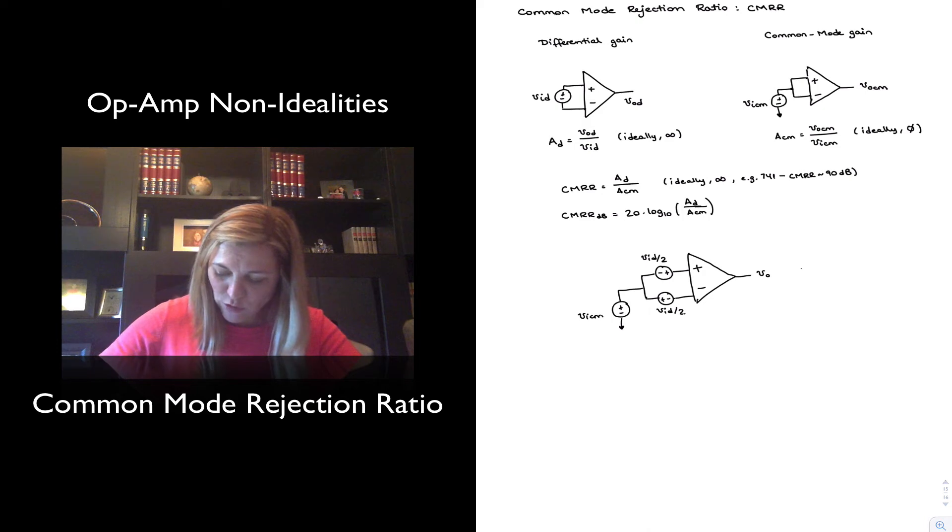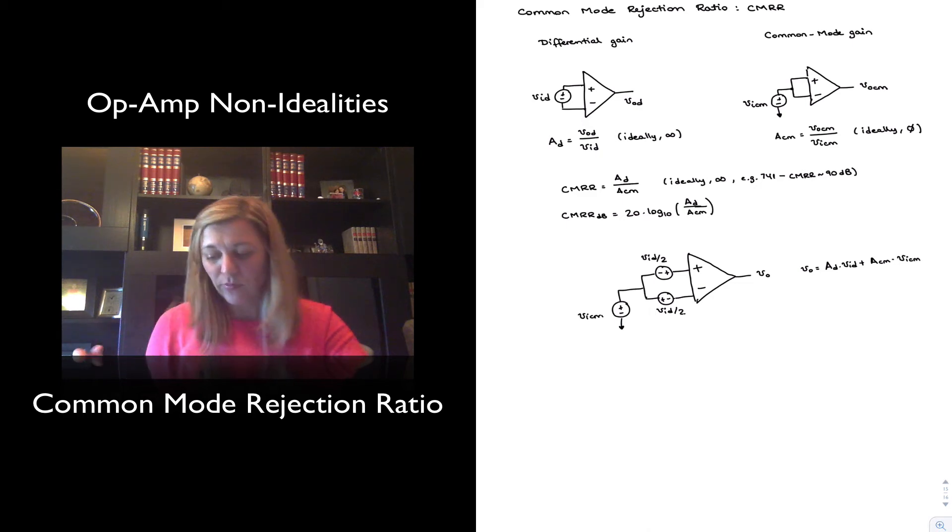And so my overall output for the amplifier will be the differential gain times the differential input signal plus the common mode gain times the common mode input signal. And from here, perhaps it is easier to see the offset that the common mode gain creates at the output.